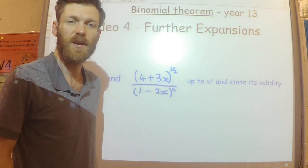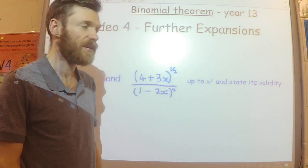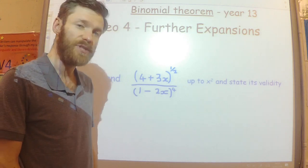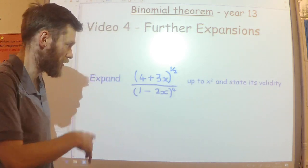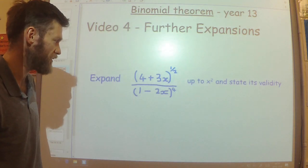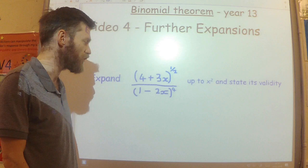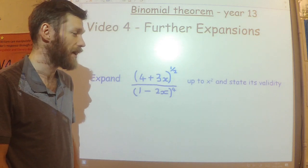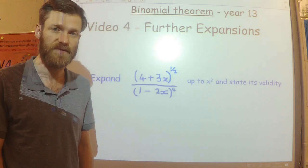This is the fourth video on the binomial expansion, where we're going to have a look at doing further expansions. We're just going to do one example, which is this one here. So it says to expand 4 plus 3x to the power of 1/2 over 1 minus 2x to the power of 4, up to the x squared term, and we need to state the validity.